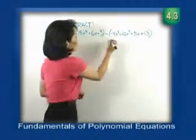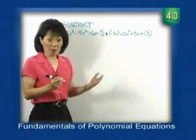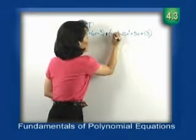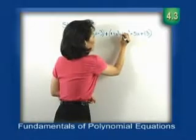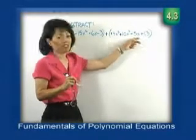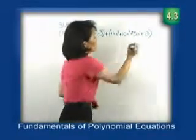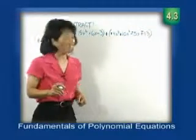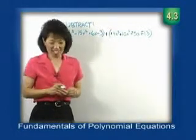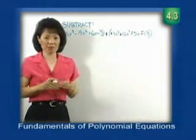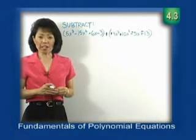So it looks like this: the subtraction sign becomes addition. Negative 4x to the 3rd changes to positive 4x to the 3rd. Negative 10x squared becomes positive 10x squared. Positive 5x now becomes negative 5x. And plus 13 becomes minus 13. Now that we've made the sign change, notice we've converted our subtraction problem into an addition problem. So now we return to adding these two polynomials, identifying like terms and combining numerical coefficients.